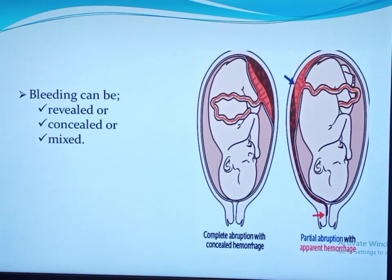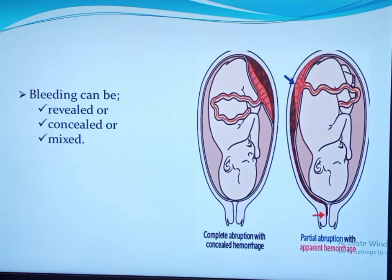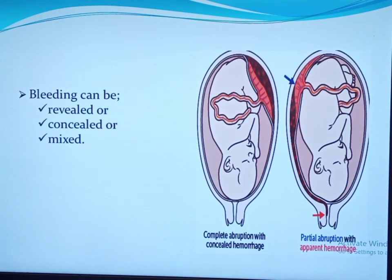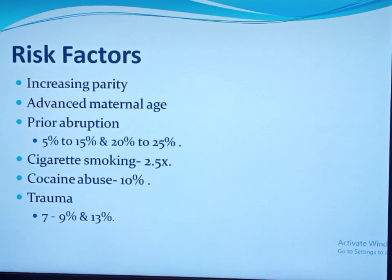In concealed hemorrhage, the bleeding is retained between the separated part of the placenta and the uterine wall, or between the decidua and the membranes, with no external bleeding. This causes a delay in diagnosis and is associated with poor maternal and fetal outcomes. Concealed hemorrhage also significantly increases the risk of consumptive coagulopathy, because intrauterine pressure pushes the produced thromboplastin to the large veins draining the placental implantation site. Concealed hemorrhage is relatively rare, occurring in 10 to 20 percent of abruptions. The mixed type occurs when both revealed and concealed bleeding occur together.